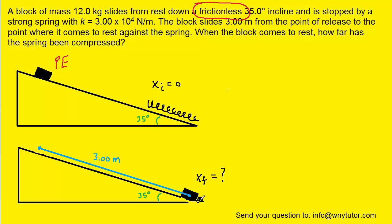So, at the top, we have the gravitational potential energy. At the bottom, we have the spring potential energy. There's no kinetic energy at the bottom because the block has come to rest. So, what we know from the conservation of energy is that the gravitational potential energy will equal the spring potential energy.